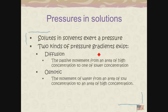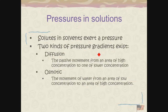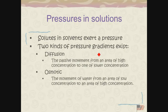Let's change gears and talk about what goes on in solution. Whenever a solute is placed into a solvent — the solute being the vodka, the solvent being the orange juice as you're making a screwdriver — that solute ends up exerting a pressure. There are two different pressure gradients: diffusion, which is the passive movement from a high concentration to a lower concentration; and osmotic pressure due to osmosis, where water moves from an area of low concentration to an area of high concentration. In both cases, the goal is equilibration between the two areas.